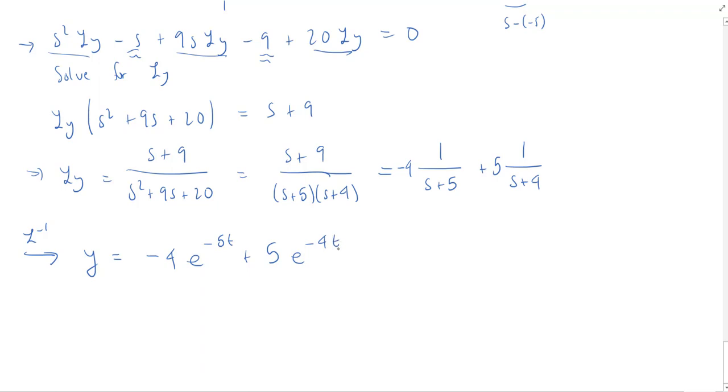And that's our solution. We actually were able to find a solution to that original y double prime plus 9y prime plus 20y equals 0. That was our original differential equation. So this is a solution for that, along with the initial conditions, that y of 0 is 1 and y prime of 0 is 0. In fact, that's going to be the only solution to this differential equation. How cool is that?